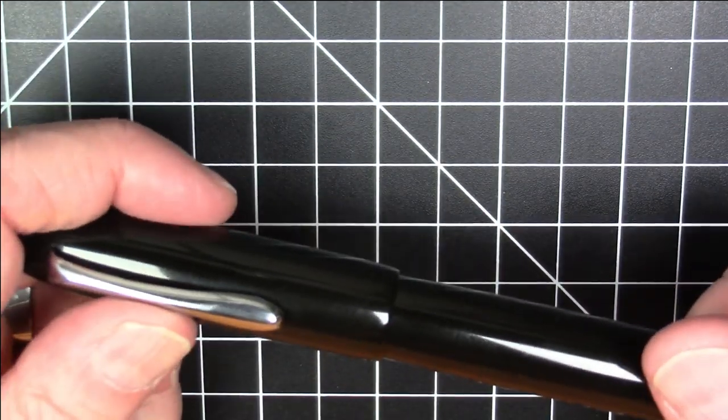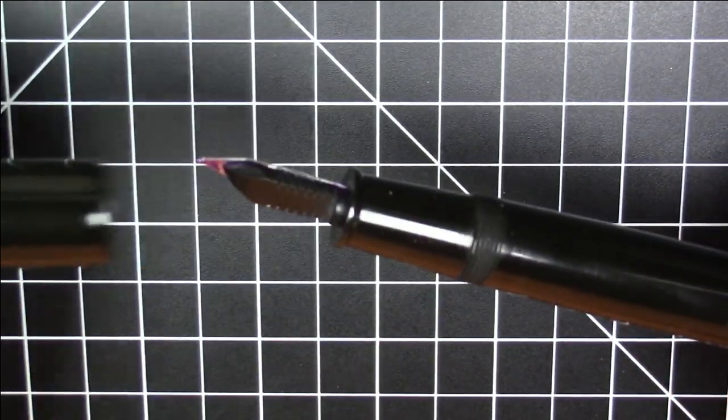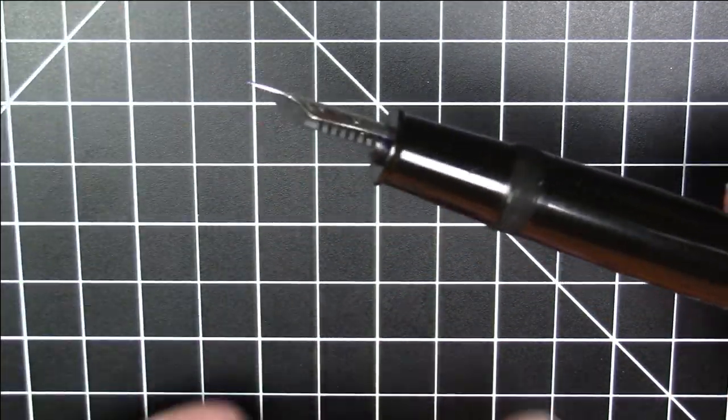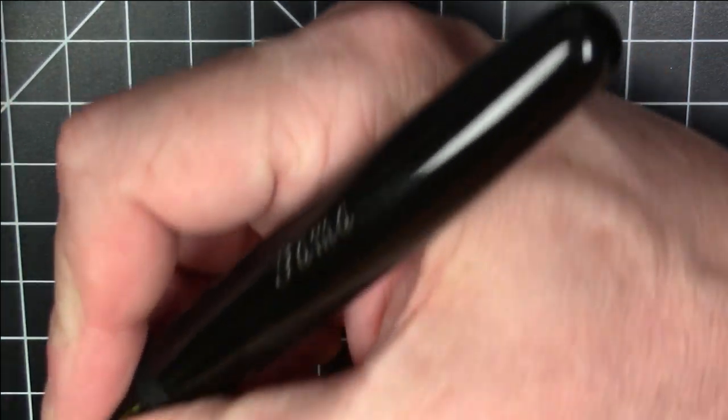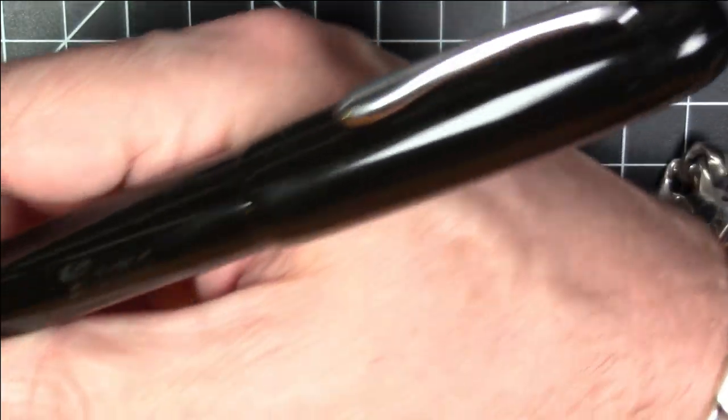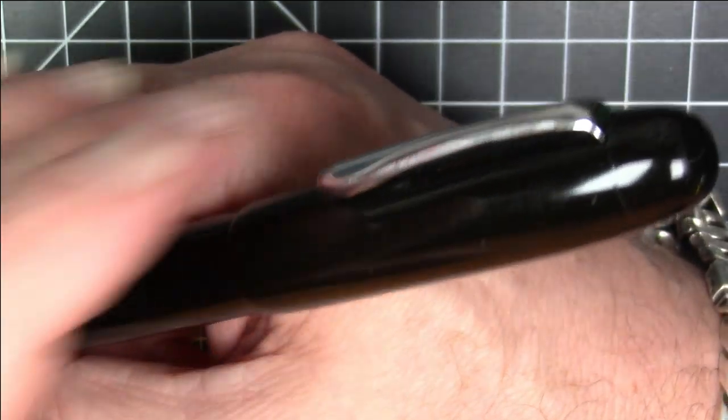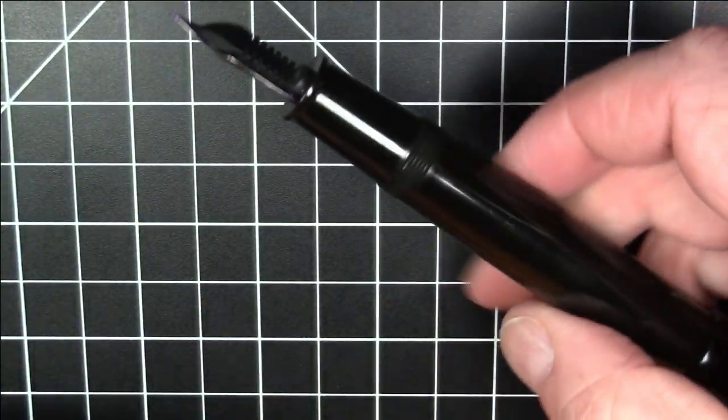It is an unscrew to cap pen, takes two and a half turns to unscrew. And it has some threads here, not obtrusive at all. It is certainly large enough to use unposted. However, the pen does post. It posts well, pretty big, not back-weighted, but pretty long when posted. I do like to post my pen, so I usually write with it posted.